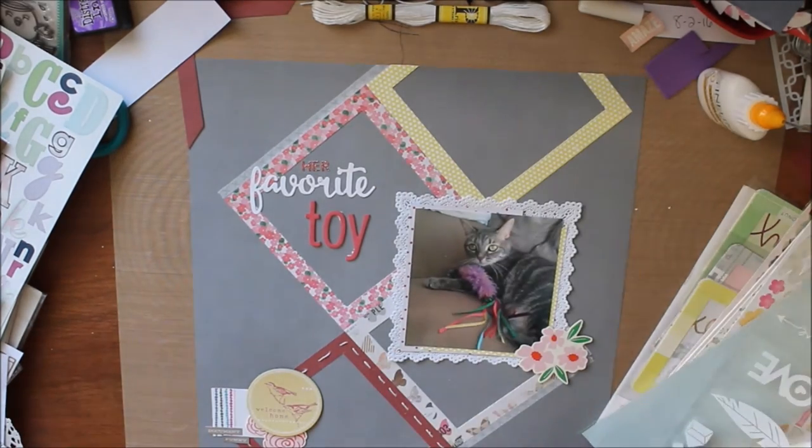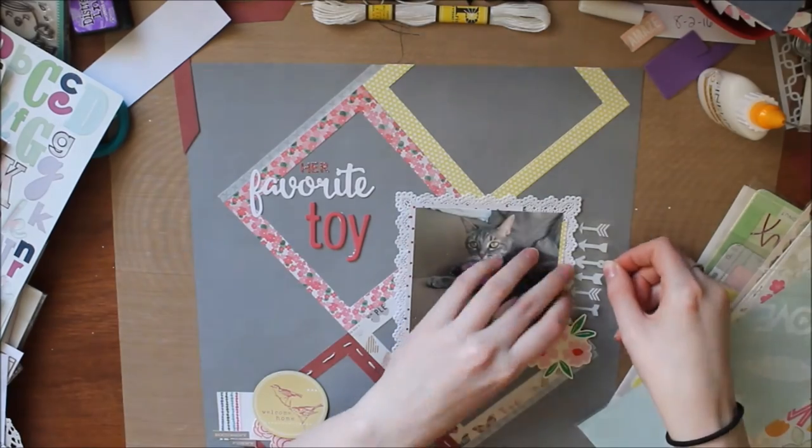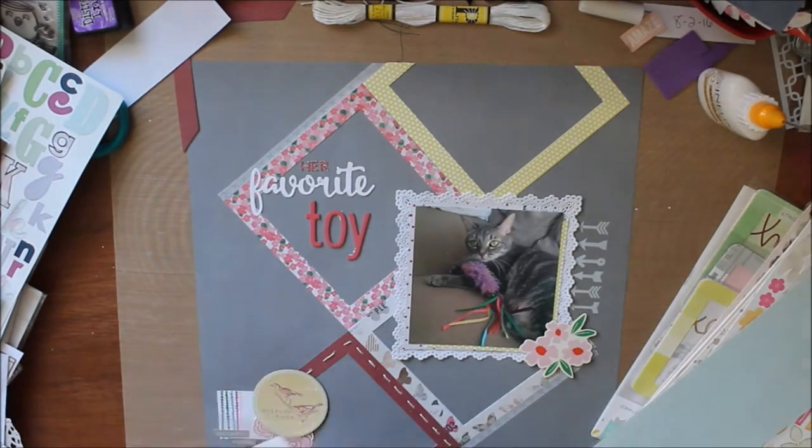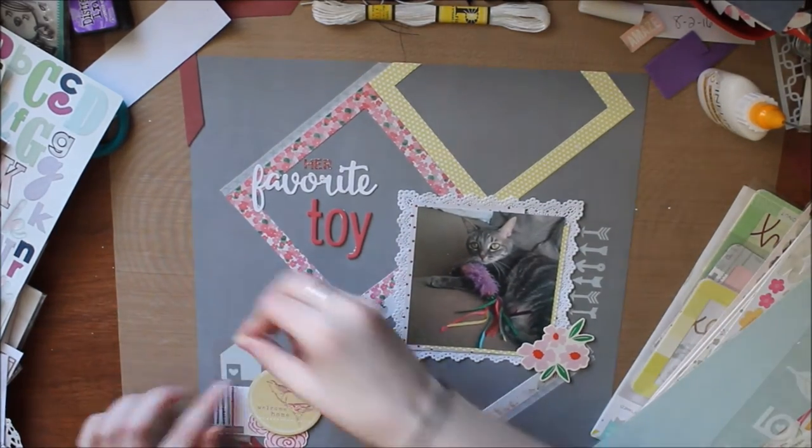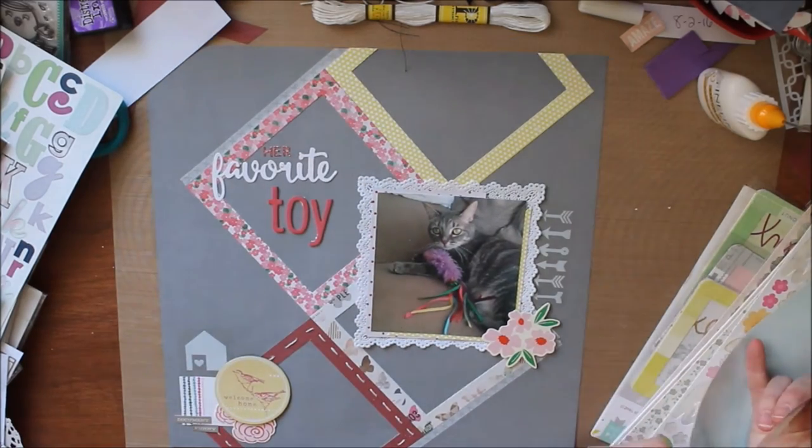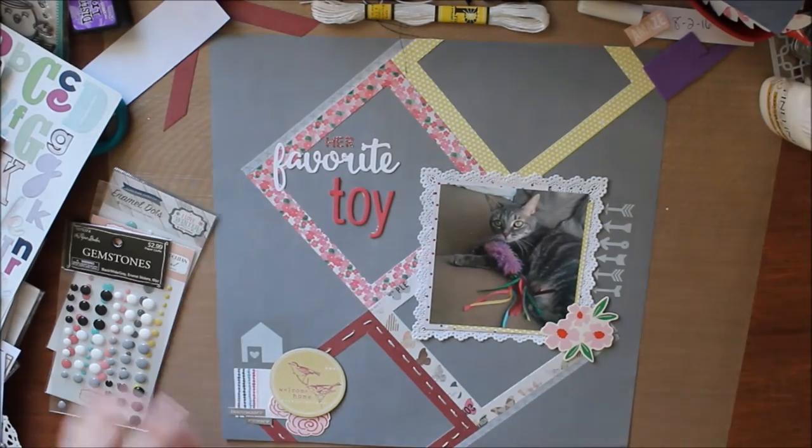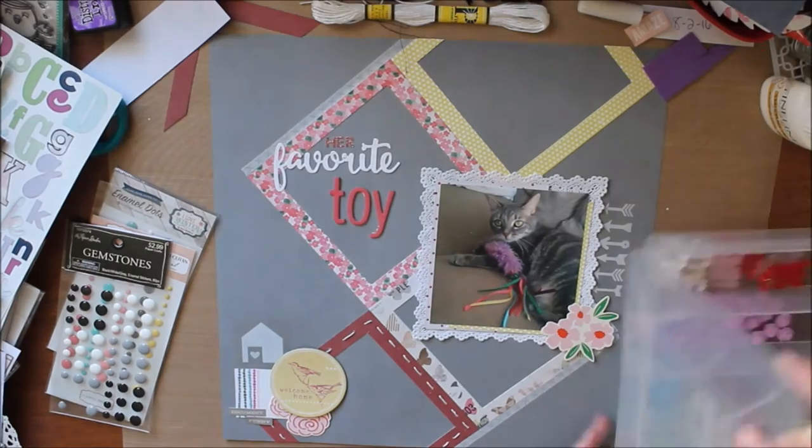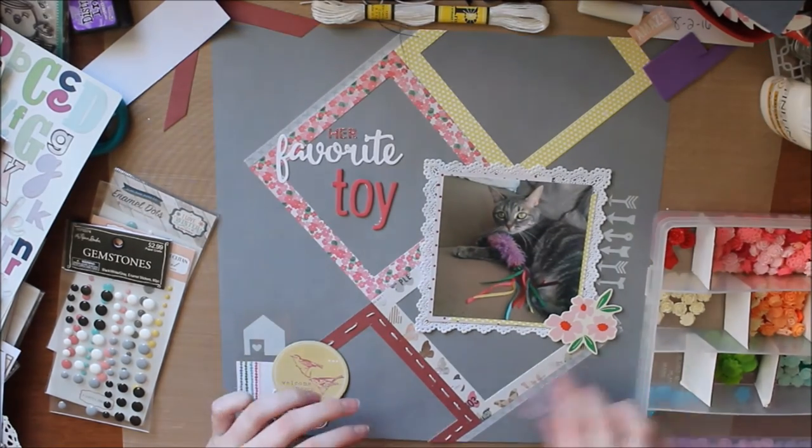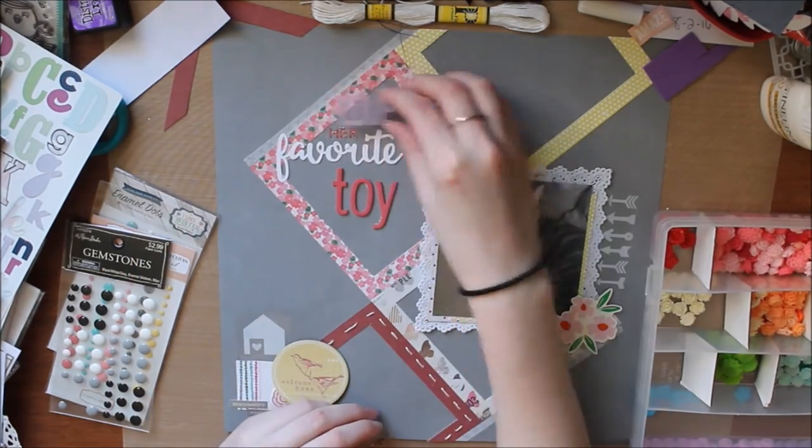So I also put out these Cosmo Cricket clear stickers. I pull out the arrows and the house which add a little bit to the layout. I like that they're clear and then just the white part because you can't really tell on camera but the clear part is kind of distracting in person. It's just like a plastic that I don't like.